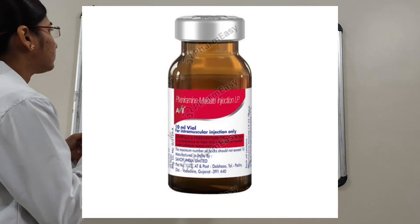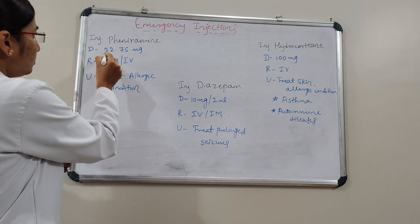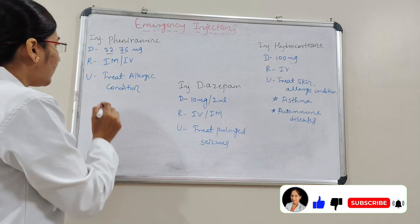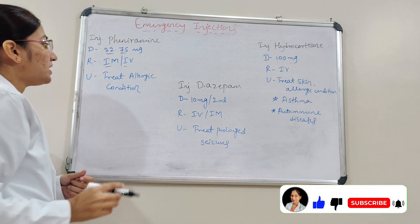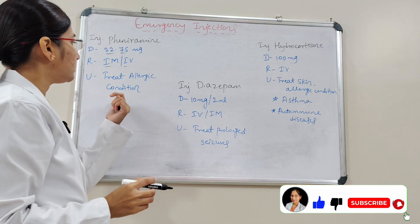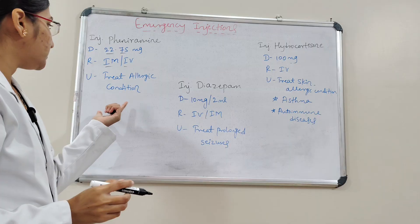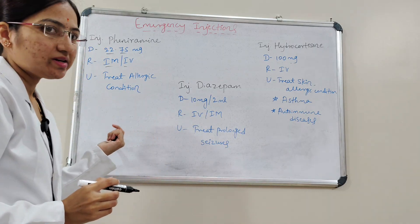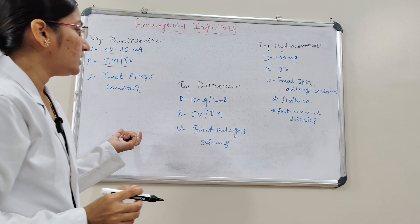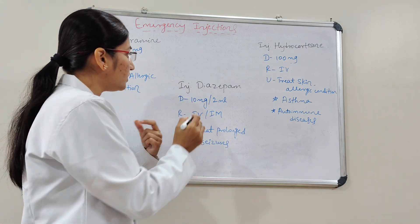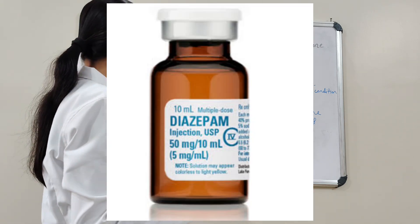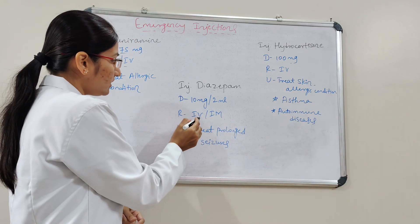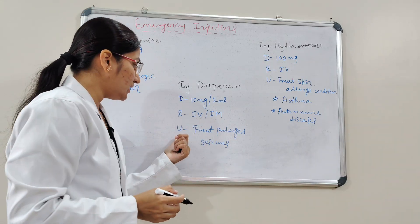The next injection is Phenytoin. The dose is 22.75 mg, routes are intramuscular or intravenous. It is used to treat prolonged seizures.